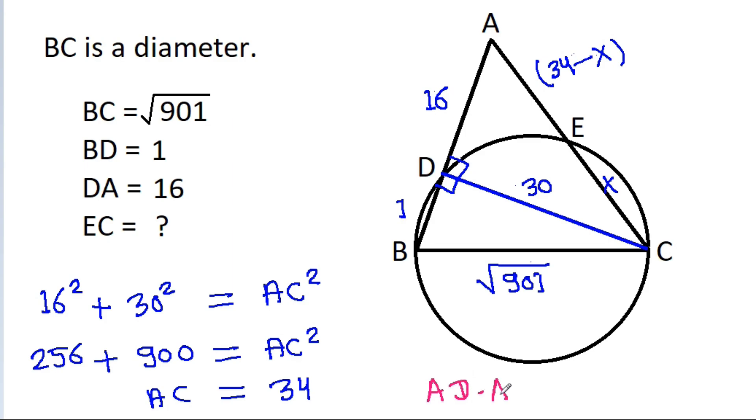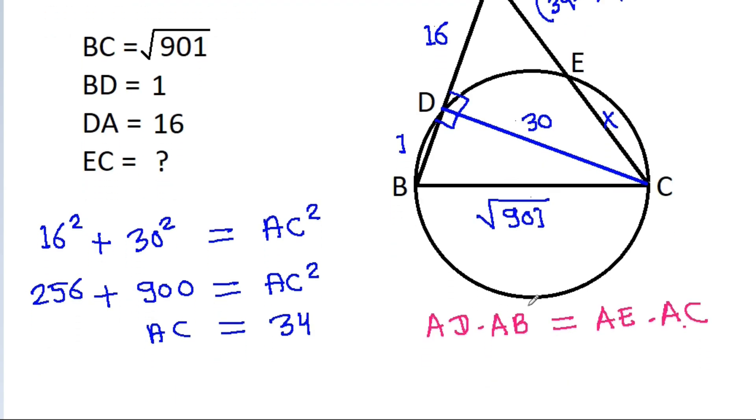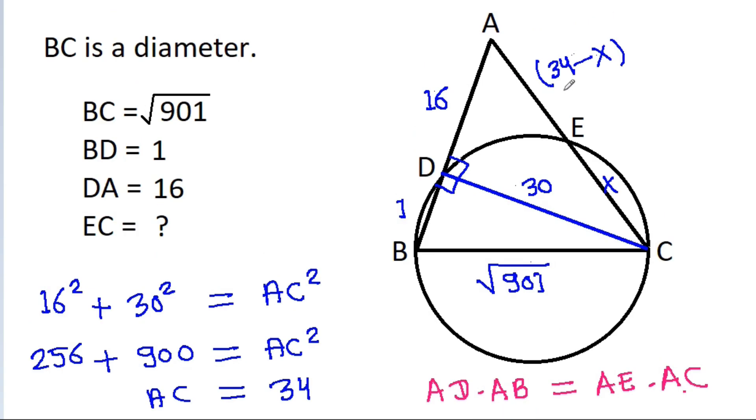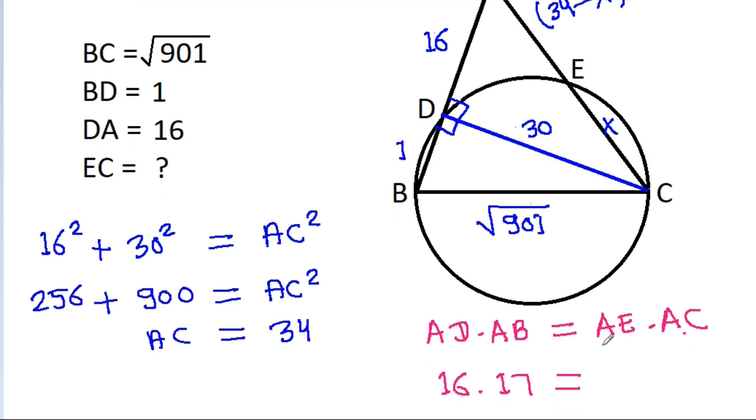AD times AB equals AE times AC, and AD is equal to 16. AD is 16 and AB is 17, equals AE which is 34 minus X, and AC is equal to 34.